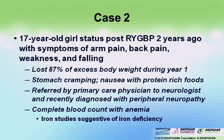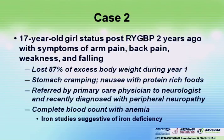Case two: a 17-year-old girl who had a Roux-en-Y gastric bypass two years ago. She has arm pain, back pain, weakness, and is falling. She was a gold star for her program — in the first year she lost 87% of her excess body weight, when the goal was really only about 60%. She is complaining of stomach cramping and some nausea when she eats protein-rich foods. She was referred by her PCP to a neurologist and diagnosed with peripheral neuropathy. Lab work showed anemia with iron studies suggestive of iron deficiency.